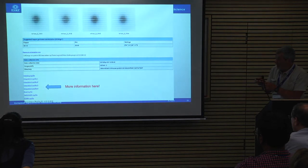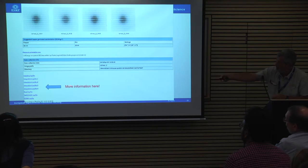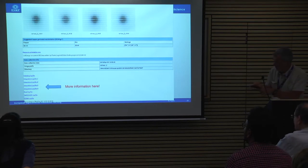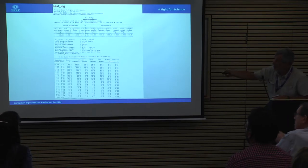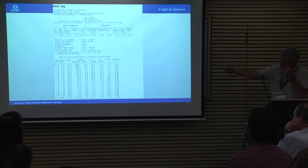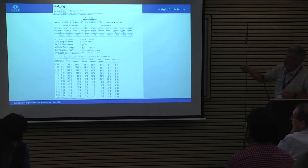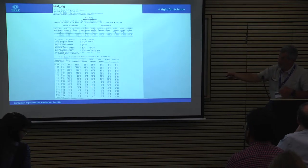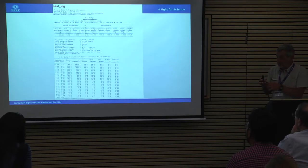Before starting data collection, look at the Wilson plot showing completeness vs. rotation range. You can also find detailed output from BEST — a log file with predictions of future statistics — showing what you'll achieve if you follow the BEST plan, allowing you to decide if modifications are needed.